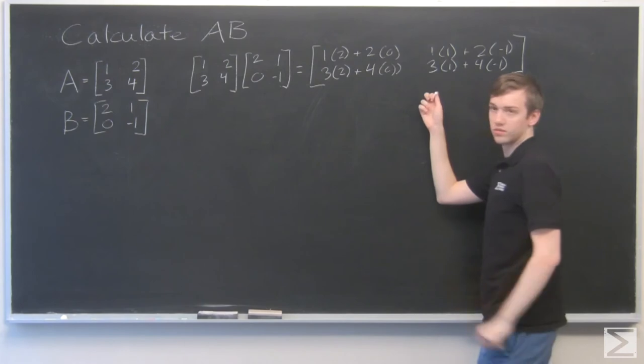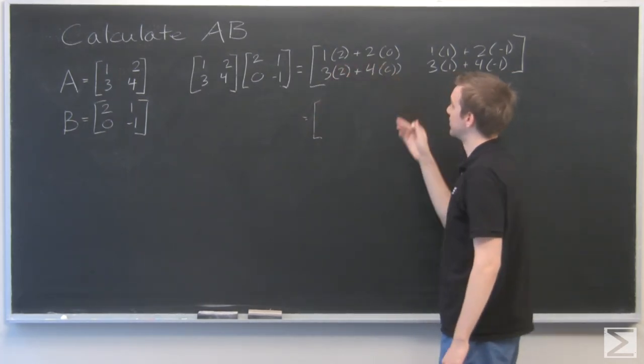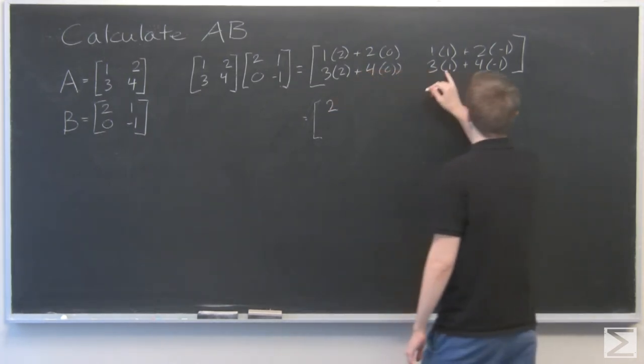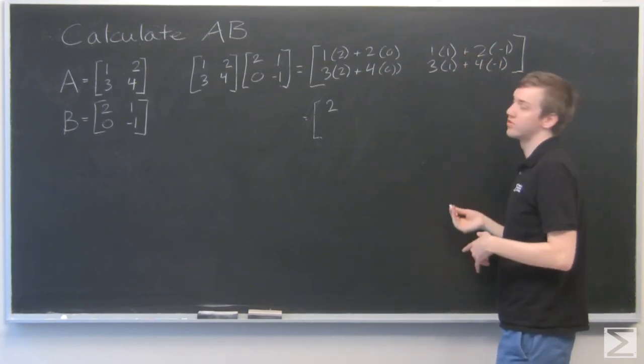Now we just need to simplify this. So 1 times 2 plus 2 times 0, that's just 1 times 2 is 2. 1 times 1 plus 2 times minus 1, that's 1 minus 2, that's negative 1.